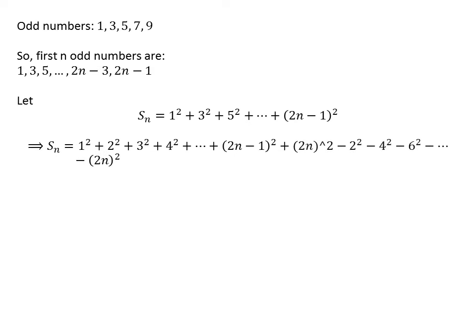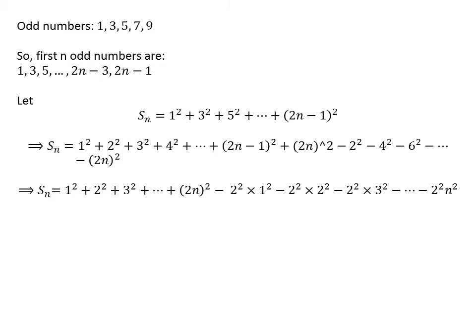So Sn is equal to square of 1 plus square of 2 plus square of 3 plus square of 4, and so on up to square of 2 times n, minus square of 2 minus square of 4 minus square of 6, and so on up to square of 2 times n. Since 2 squared is a factor of every square of an even number, we can write Sn is equal to square of 1 plus square of 2 plus square of 3 and so on up to square of 2 times n, minus 2 squared times the quantity square of 1 plus square of 2 plus square of 3 and so on up to square of n.